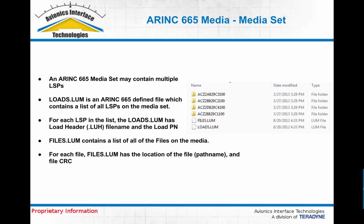A media set is a collection of one or more LSPs, and it also has a couple of additional overhead ARINC-665 specified files. One of those is the loads.lum file, which is basically a list of all the LSPs, or all the header files (.luh's), that are part of that media set. For each header file, it contains the header file name and the part number for that loadable software package. The media set also contains a files.lum file, which is basically a directory of every file on the media set — containing the file name, relative path, length, and CRC for each file. The files.lum also contains a CRC over the whole media set, which can be used to validate that the entire media set is valid and has not been corrupted.